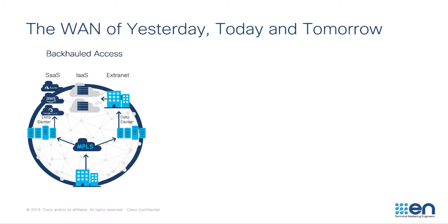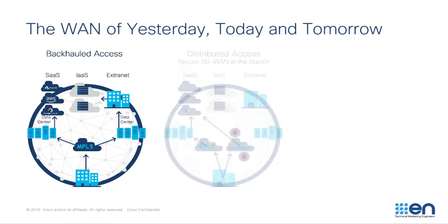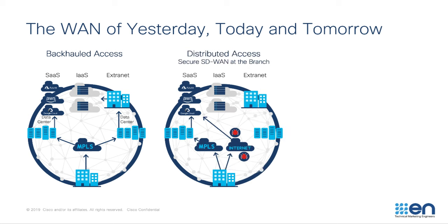So along comes SD-WAN, which ushers in a new model of internet access: distributed. With SD-WAN, organizations were free to drop internet-bound traffic off locally at the branch to allow it to access cloud resources directly. And coupled with features like Cloud onRamp for SaaS and Cloud onRamp for IaaS, it could be reasonably optimized.